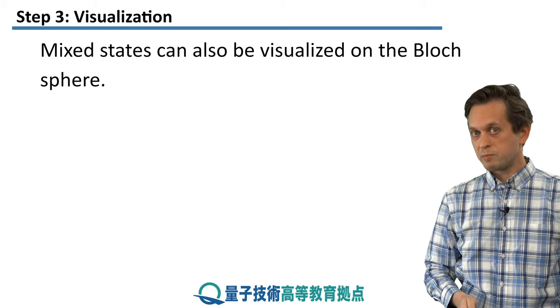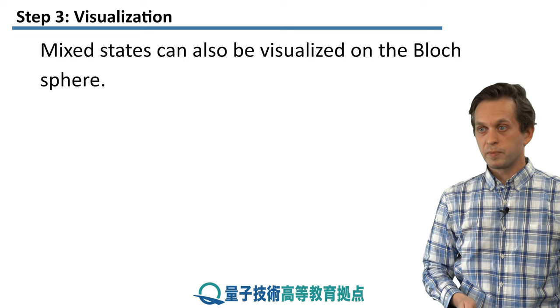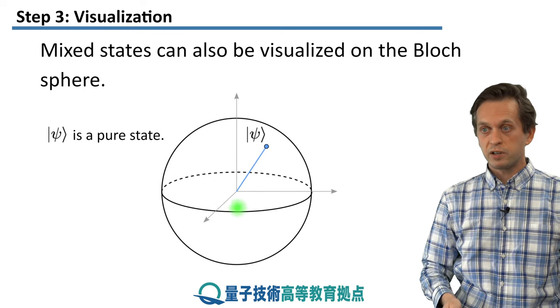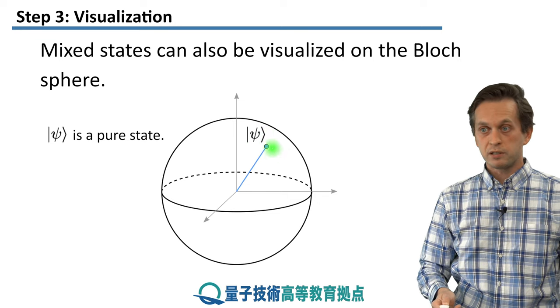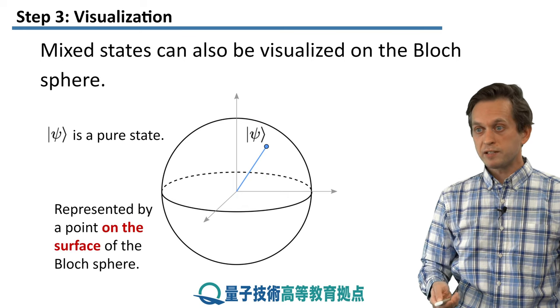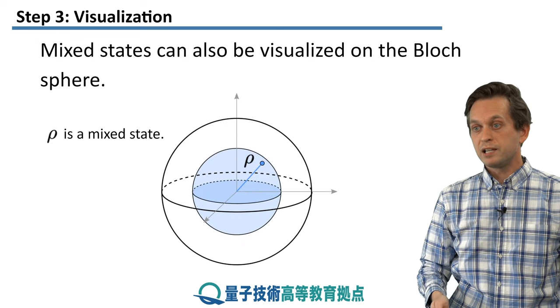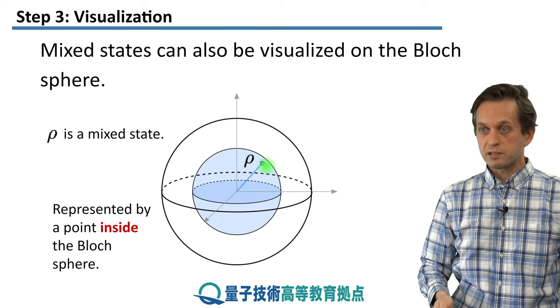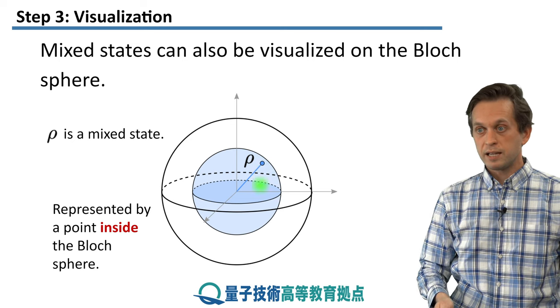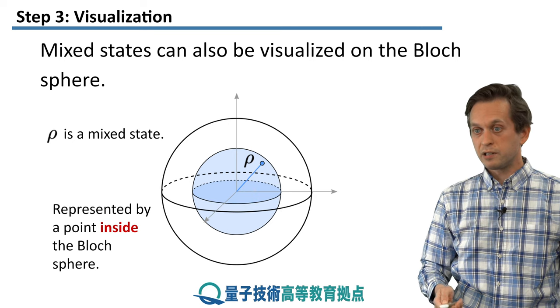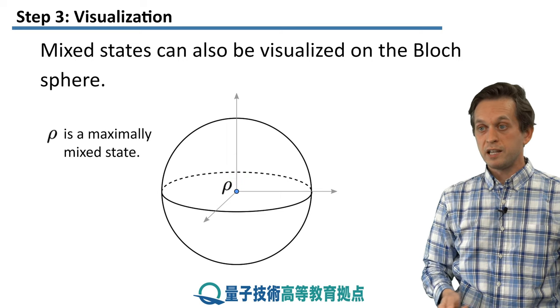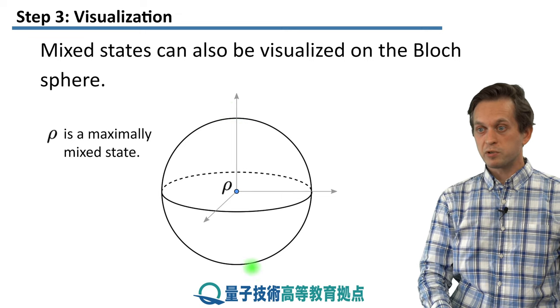Now, we also saw that pure states can be visualized as points on a Bloch sphere. Can we do something similar for mixed states? And the answer is yes, we can. Just to remind you, a Bloch sphere is a unit sphere, and all of the pure states, they are represented as points on this unit sphere, on the surface of the unit sphere. A mixed state, on the other hand, is represented as a point living inside the unit sphere. So the radius of the line connecting the center of the sphere with the point representing the mixed state has length less than 1. And in particular, we've got a maximally mixed state, which lives right in the center of a Bloch sphere. And this is an equal superposition of the pure state 0 and pure state 1.